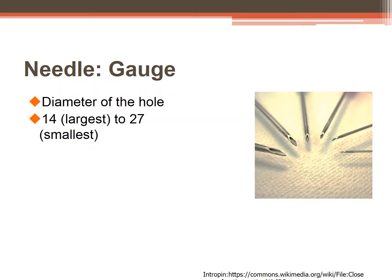The gauge of a needle refers to the diameter of the hole through the needle — the higher the gauge, the smaller the hole. When we choose a needle gauge, it is based on the site of injection and the viscosity of the fluid being given. An intradermal injection would use a high gauge, or very fine needle with a small hole. An intramuscular injection will require a thicker needle or a lower gauge needle, like a 20 to 23.